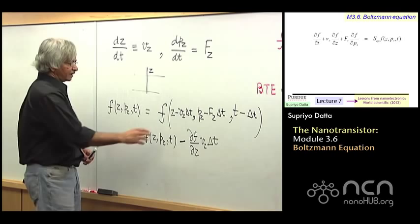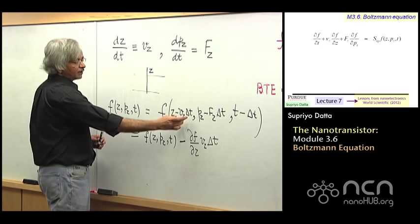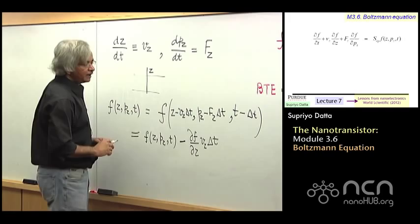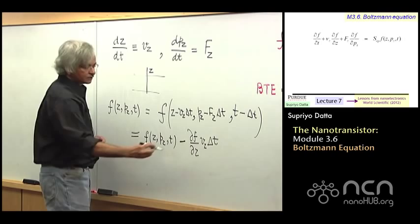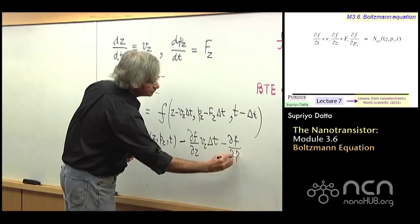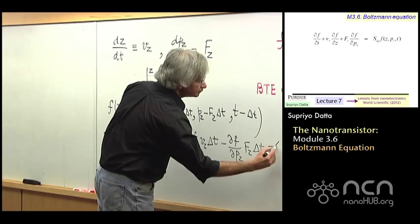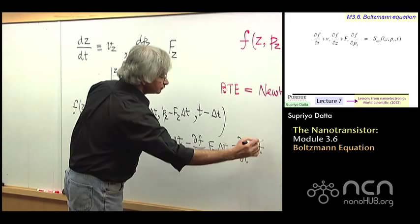Why? Because this is the function at z and what I want to know is what is the function at z minus some small thing and then I can use what you might call this Taylor series expansion around that point. And so you could write this, but then I also have to include a partial with respect to p because of that one. So I should write minus del f del pz times fz delta t. And then, I also have to include the partial with respect to time.